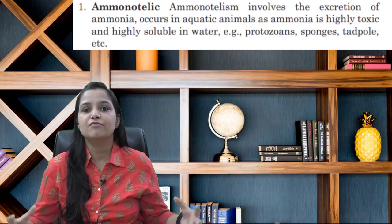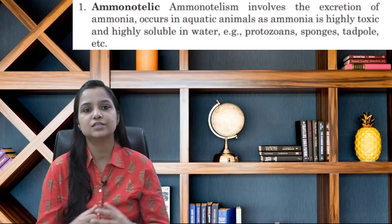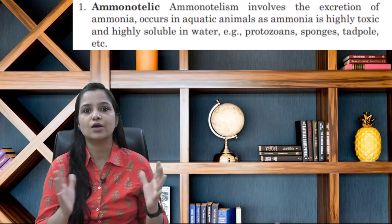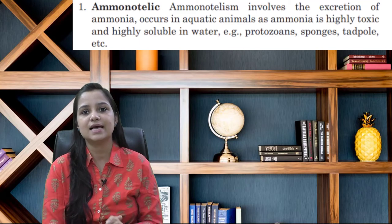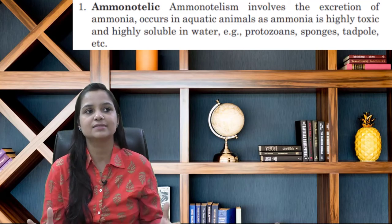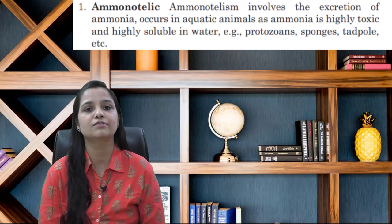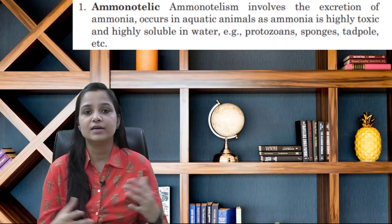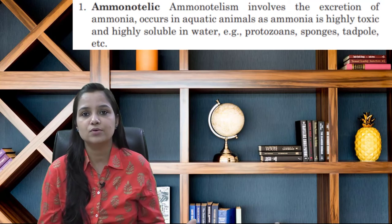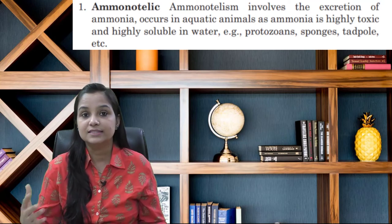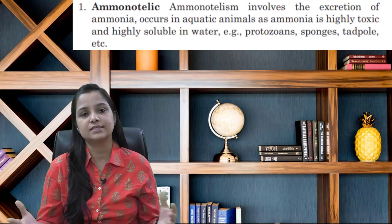The first one is the ammonotelic. Ammonotelism involves the excretion of ammonia, and it occurs in aquatic animals, as ammonia is highly toxic and highly soluble in water. For example, protozoans, sponges, tadpoles, etc.